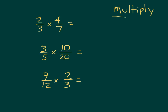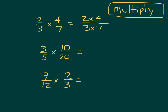Let me show you three last problems. Here we're going to multiply without area models. We have two-thirds times four-sevenths. That would be two times four in the numerator, and three times seven in the denominator. Neither of these numbers are divisible by three or seven, so we are not able to cancel anything; we just do our multiplication. Two times four is eight, three times seven is twenty-one. So two-thirds times four-sevenths does equal eight-twenty-firsts, which is already in simplest form.